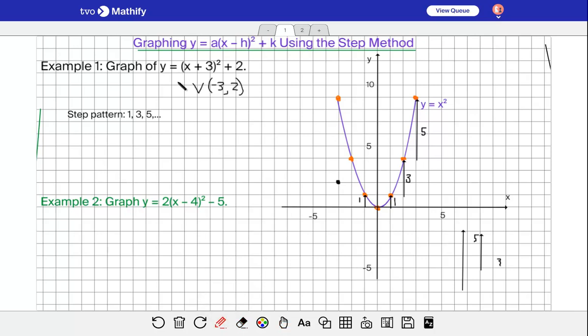My vertex is at (-3, 2). The a value is 1 here, so my steps are 1, 3, 5. If I go right 1 I go up 1, and if I go left 1 I also go up 1. Then from each of those if I go over, I go up 3. Then I'll do the 5, so over 1, 2, 3, 4, 5 would be right there. You can kind of see the parabola now.